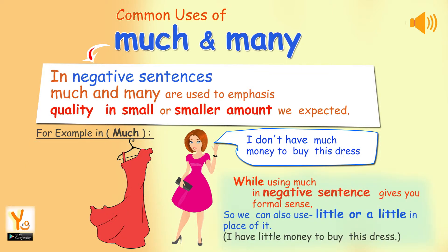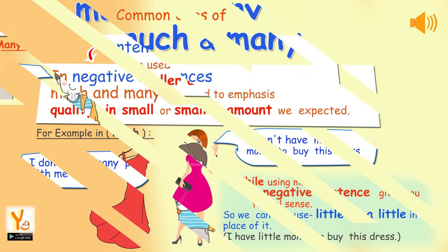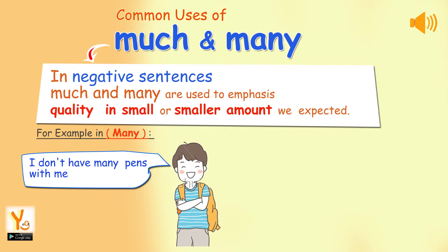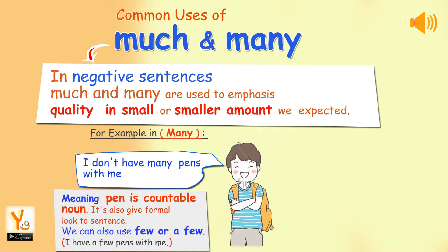Using much in a negative sentence gives a formal sense, so we can also use little or a little in its place. Example: I have little money to buy this dress. For many: I don't have many pens with me. Pen is a countable noun. It also gives a formal look to the sentence. We can also use few or a few. Example: I have a few pens with me.